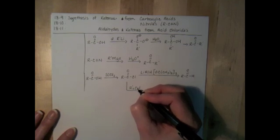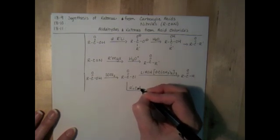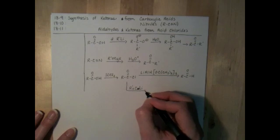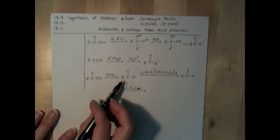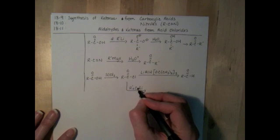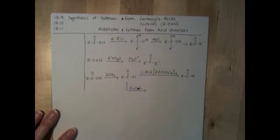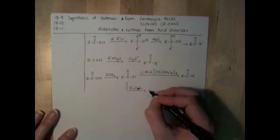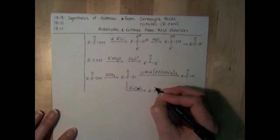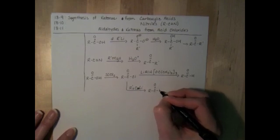Again, I'm going to, oh, that's supposed to be a U, not a 2. I'm going to be using an R prime to distinguish it from this alkyl group that's already present. And this is copper, C-U-L-I. And this will just synthesize the ketone from the acid chloride.